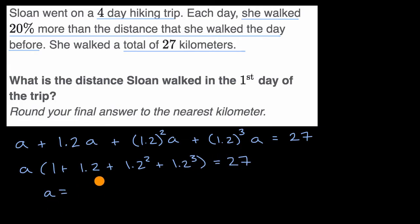A times 1 plus 1.2 plus 1.2 squared plus 1.2 to the third power is equal to 27. And then, you could say that A is equal to 27 over 1 plus 1.2 plus 1.2 squared plus 1.2 to the third power. And we would need a calculator to evaluate this.